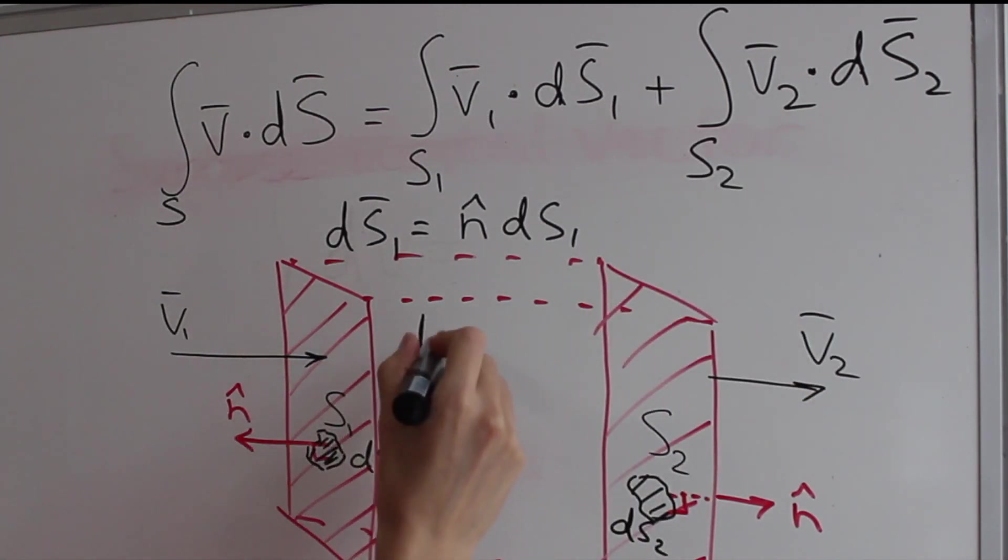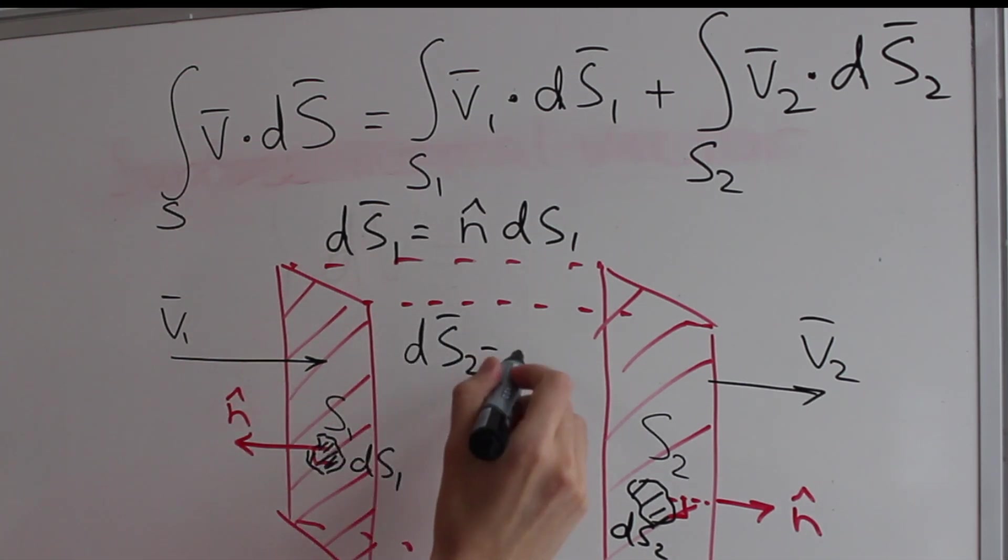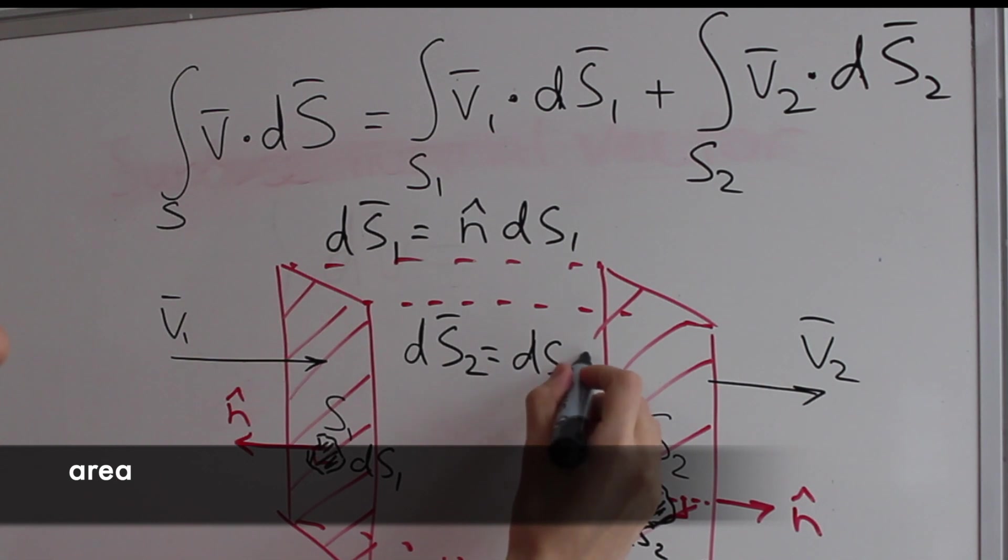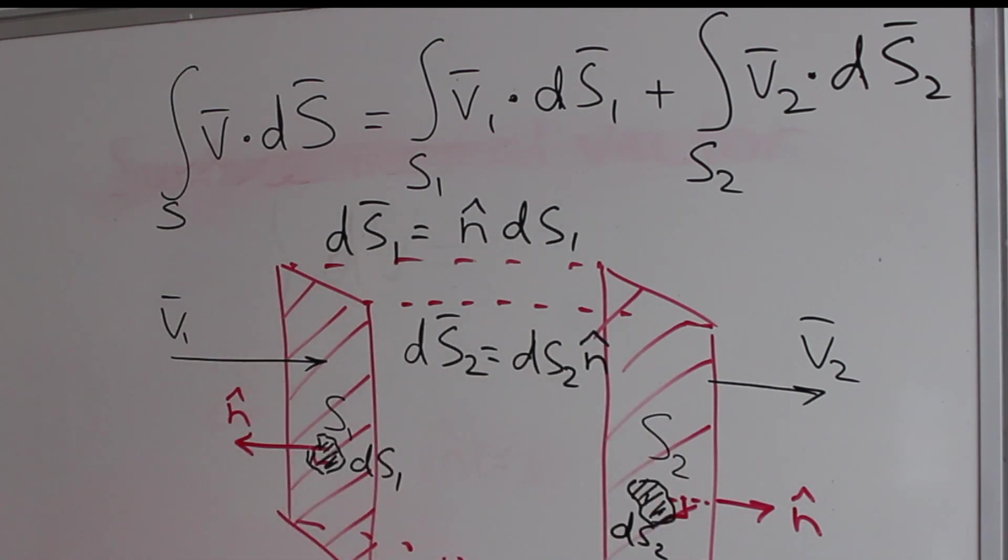Let me write it here because I'm running out of space. So notice this is a vector but now it becomes scalar ds2 which is a surface of ds2 multiplied by n hat. And this is not a dot product it's just a product of a little surface by a vector that defines that surface.